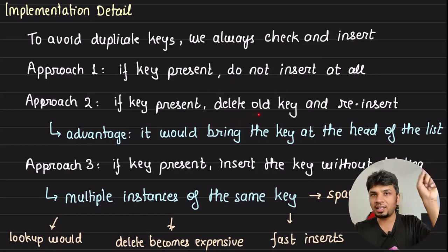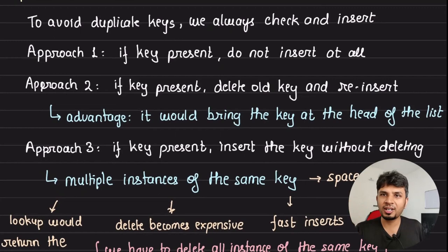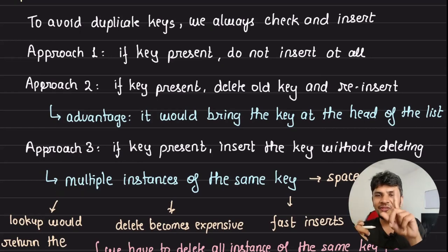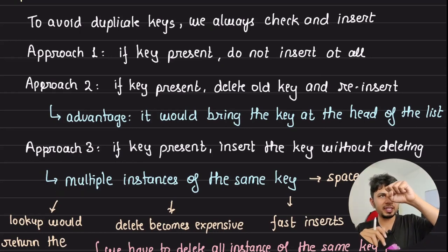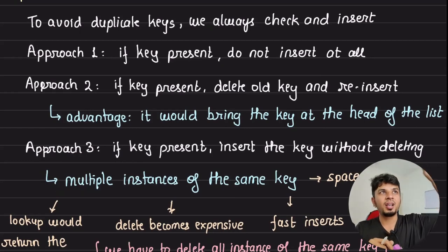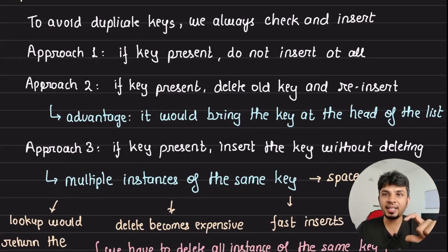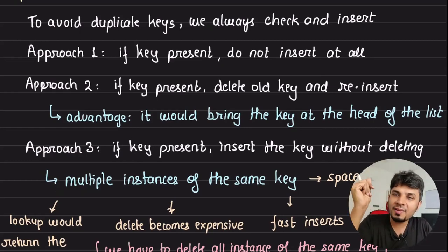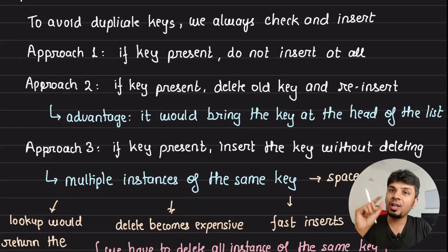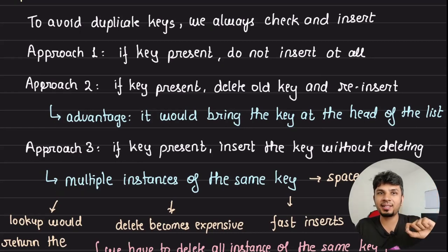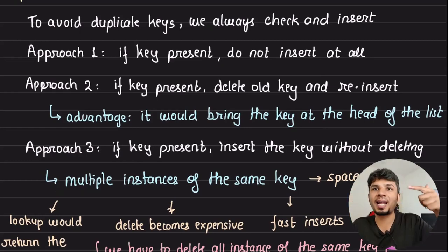Approach two: if the key is present, delete the old key and reinsert. You might ask — if the key is already there, why not just update the value? The interesting advantage is that we always insert at the head of the list, meaning upon iteration, recently inserted keys are quicker to find. If your workload is 'read your own writes' — where you're very likely to read recently written keys — you won't have to iterate the entire list. Think of it like caching for quicker access of key-value pairs.